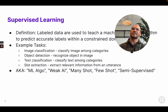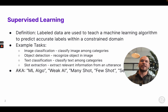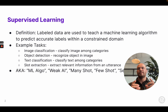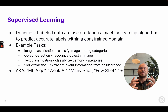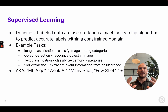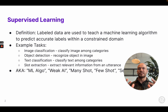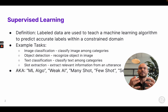Supervised learning is whenever labeled data are used to teach a machine learning algorithm to predict accurate labels within a constrained domain. Some example tasks might be image classification, where you're classifying images among a constrained set of categories, or object detection, where you're trying to recognize specific kinds of objects within an image.